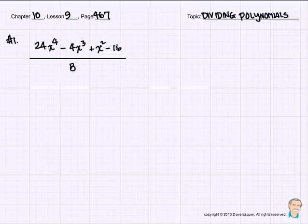So we can break these up, for example, number 1, 24x to the 4th minus 4x cubed plus x squared minus 16, all that divided by 8 into small components.